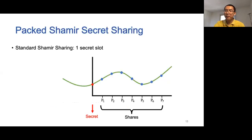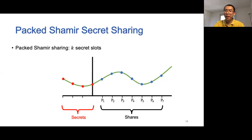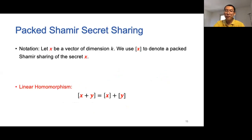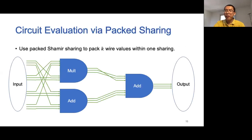Our work makes use of the packed secret sharing technique. In standard Shamir sharing, we use a random polynomial to hide a single evaluation point. The idea of packed Shamir sharing is to have multiple secret slots. Let X be a vector of dimension K; we use [X] to represent a packed Shamir sharing of the secret X. Like standard Shamir sharing, packed Shamir sharing is also linearly homomorphic — adding two sharings [X] and [Y] yields a sharing of X+Y. In general, to evaluate a single circuit, we pack K values within a single sharing and evaluate a batch of K gates each time.